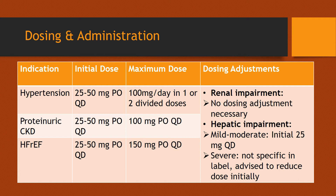There is no dosing adjustment required for patients with renal impairment. However, if a patient has mild to moderate hepatic impairment, they can be started at 25 mg once a day for Losartan. There is no specific dosing adjustment labeled for severe hepatic impairment patients; however, patients are advised to reduce the dose initially.